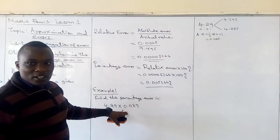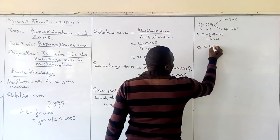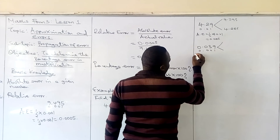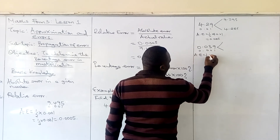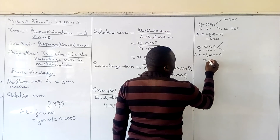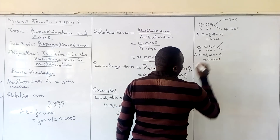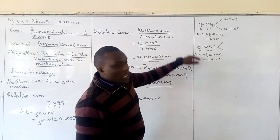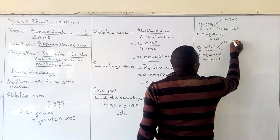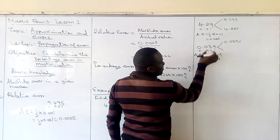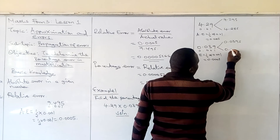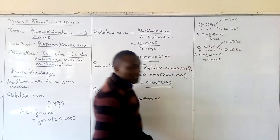The other number is 0.039. We find its absolute error: a half times 0.001 equals 0.0005. So the upper limit of 0.039 is 0.039 + 0.0005 = 0.0395. For the lower limit, we subtract 0.0005 from 0.039, obtaining 0.0385. That completes the first step.